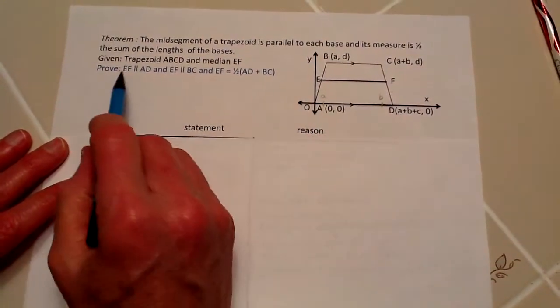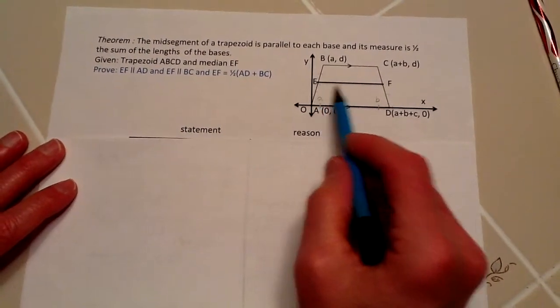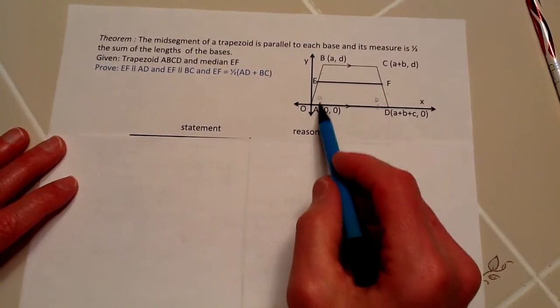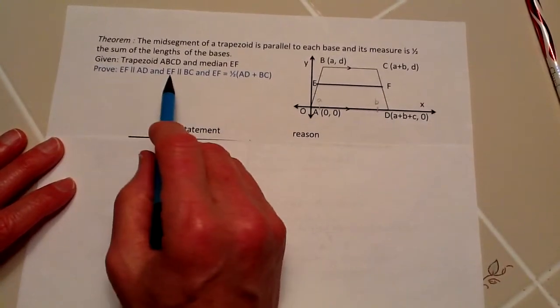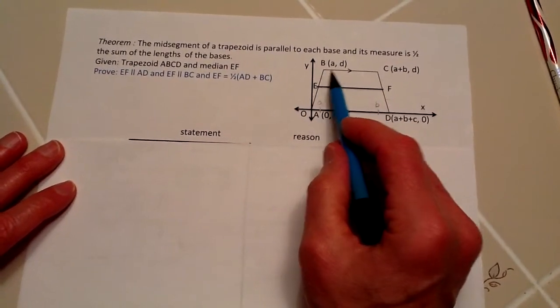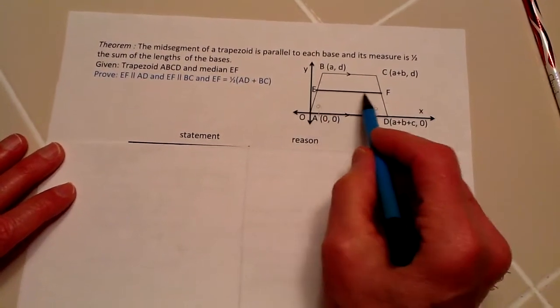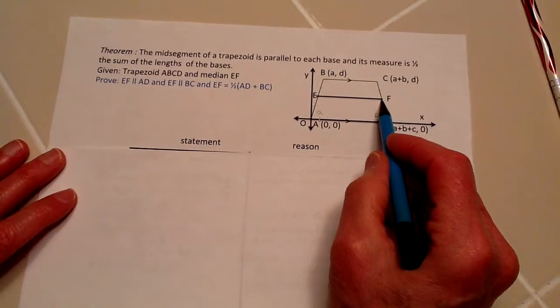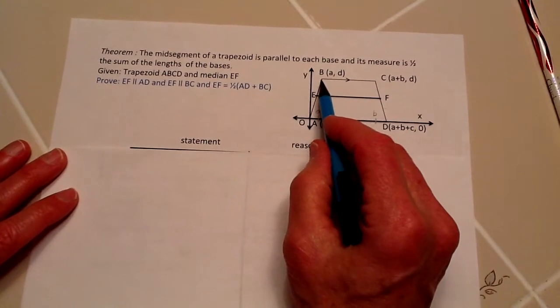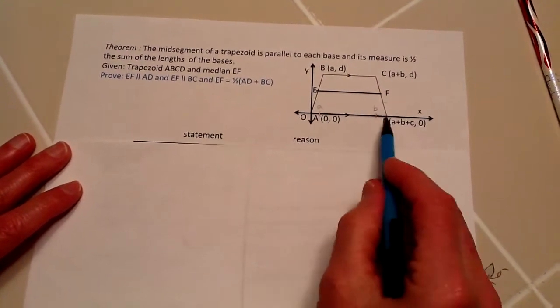We're going to be trying to prove that EF is parallel to AD and EF is parallel to BC, and that the length of EF is one-half the length of BC added to AD.